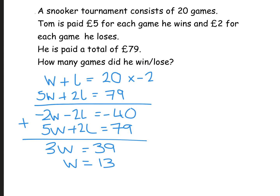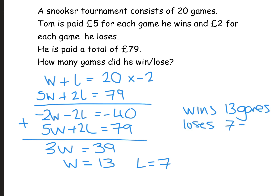If he wins 13, he loses 7. So he wins 13 games and loses 7 games — answer in words, with 'games' as the unit. Quick check: 5 times 13 is 65, plus 2 times 7 is 14, giving 79. That's correct.